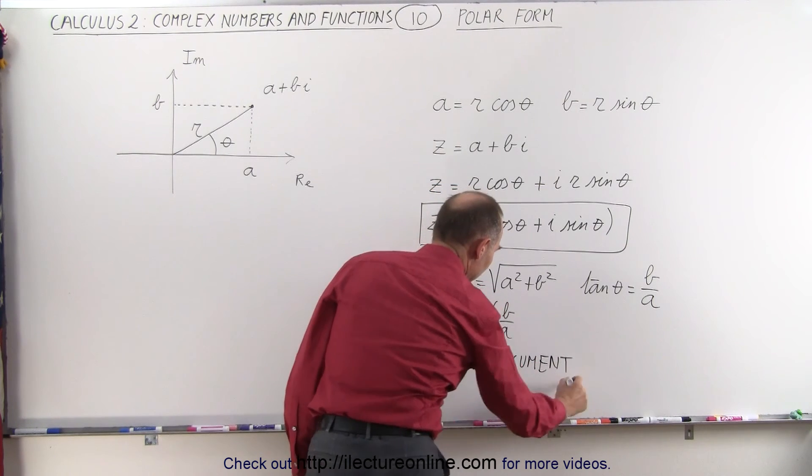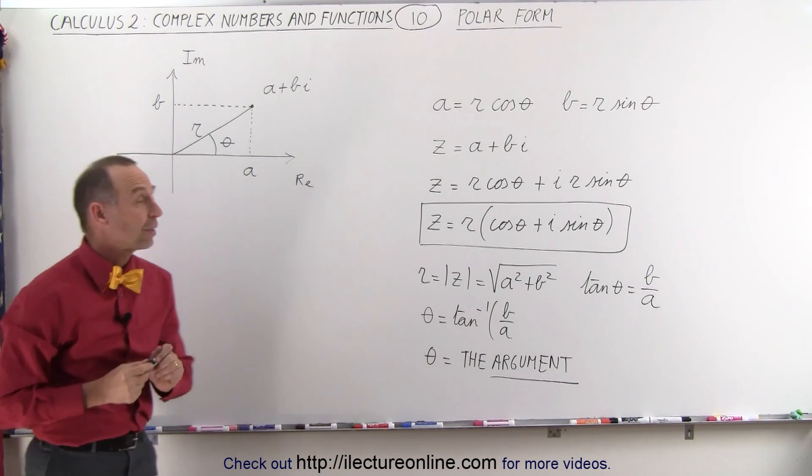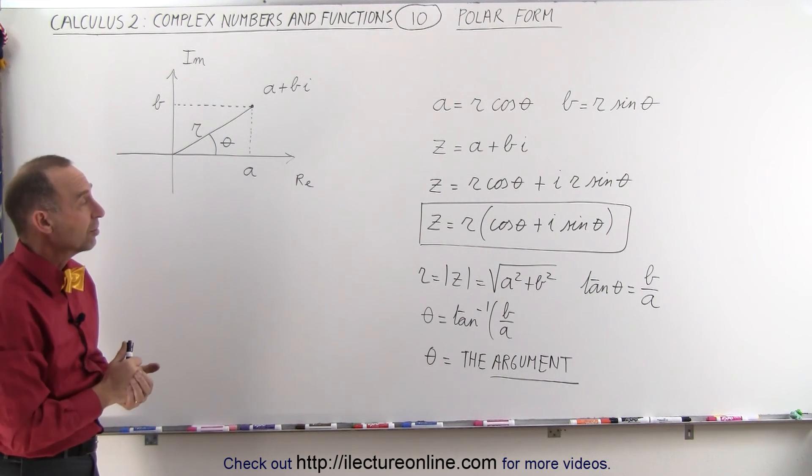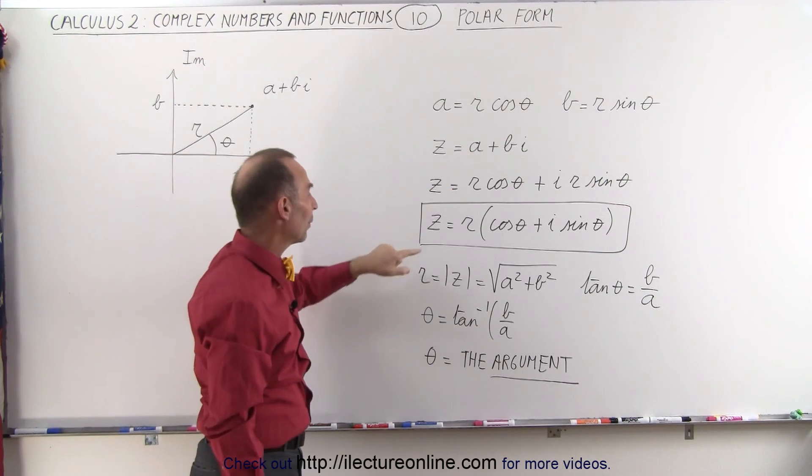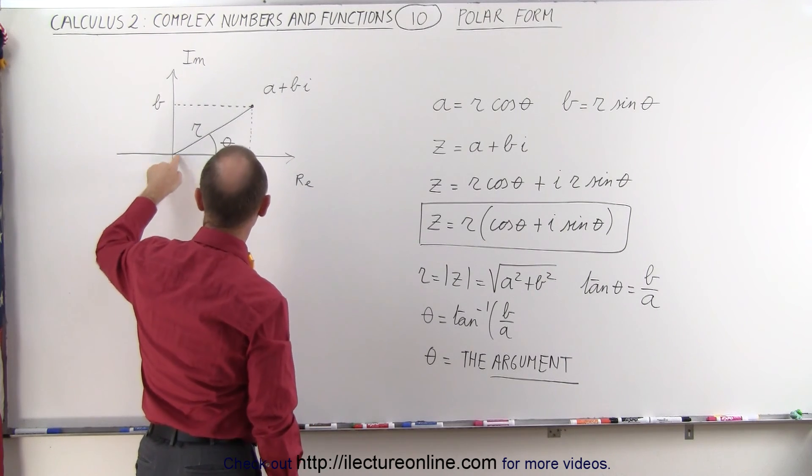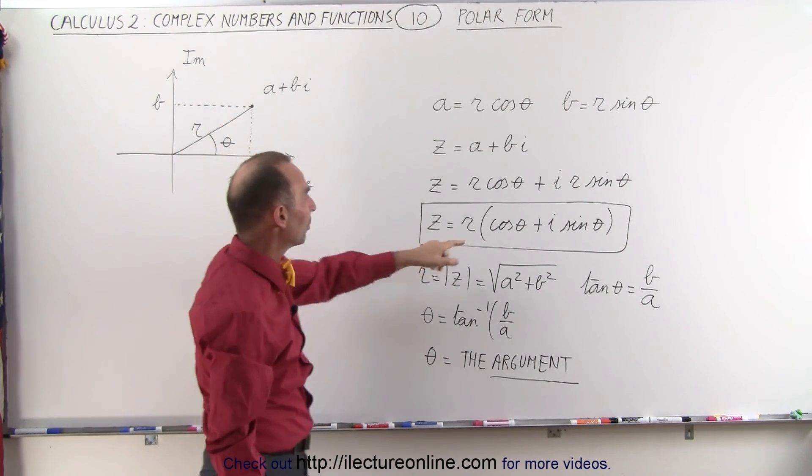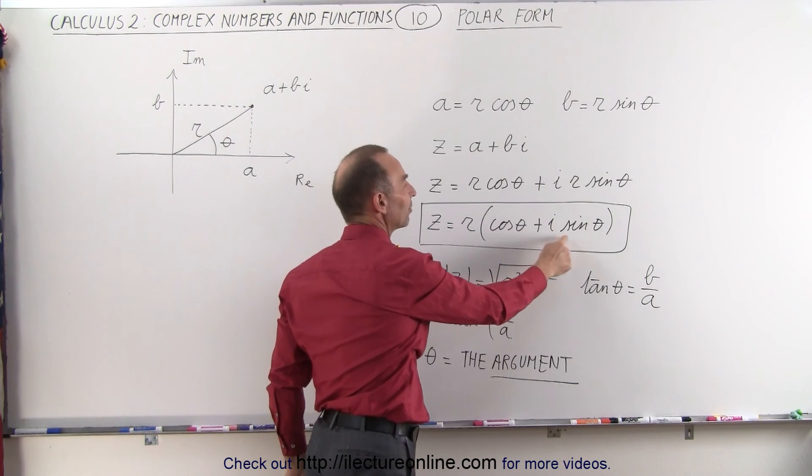Now theta can also be defined as the argument of that complex number. So that's probably a name or expression we should become familiar with. So that's the polar representation of a complex number. We can take the number Z equals A plus B I and write as Z equals R, the distance from the origin to the complex number in graphical format, times the cosine of theta plus I times the sine of theta.